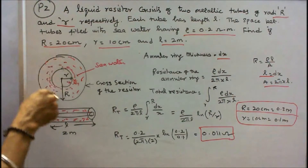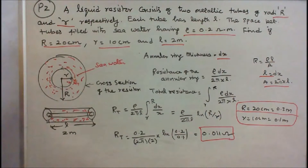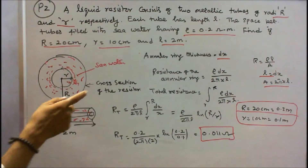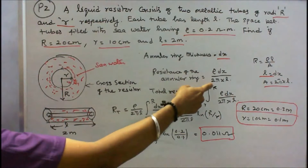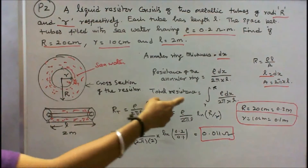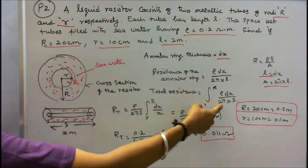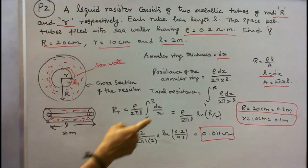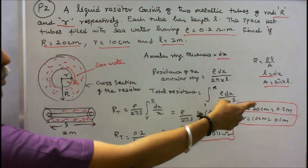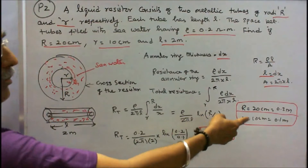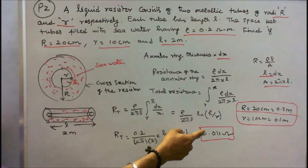Considering an annular ring of thickness dx inside the sea water, and using R = ρL/A where L = dx and A = 2πxL, the resistance of the annular ring is ρ·dx / (2πxL). Integrating from small r to capital R gives total resistance = (ρ / 2πL) × ln(R/r). Substituting R = 0.2 m, r = 0.1 m, the total resistance equals 0.11 ohms.